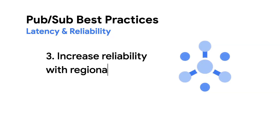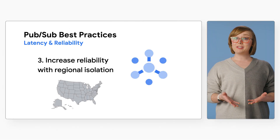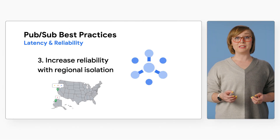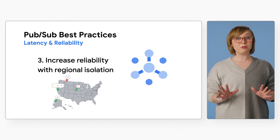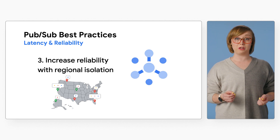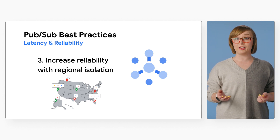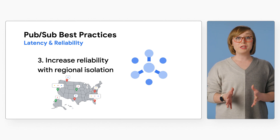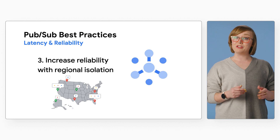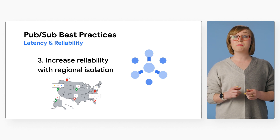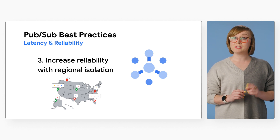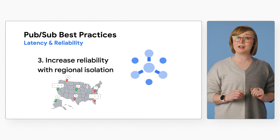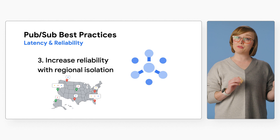Number three: increase reliability with regional isolation. For disaster recovery cases where extreme reliability and multi-regional availability are required, the regional isolation of Cloud PubSub can be used to publish each message twice or more in different regions.